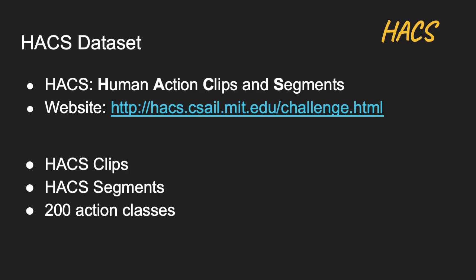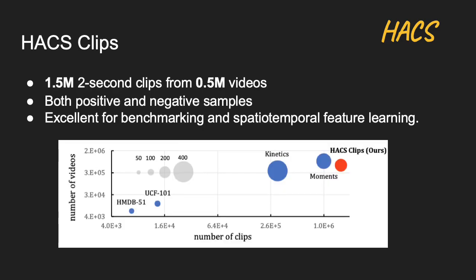There are in total 200 action classes in the dataset, and those videos come from YouTube. HACS Clips contains 1.5 million 2-second video clips from half a million videos, and it contains both positive and negative samples with annotations. So it is an excellent dataset for benchmarking and spatial-temporal feature learning.